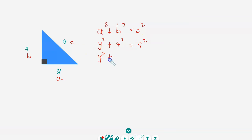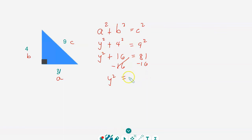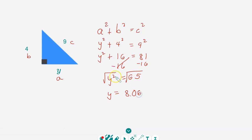Simplifying: four squared is 16 and nine squared is 81. We take away 16 from both sides, so y² equals 81 minus 16, which equals 65. Taking the square root of both sides: the square root of y² is y, and the square root of 65 is 8.06 rounded to two decimal places. There's no unit, so we leave it at that.